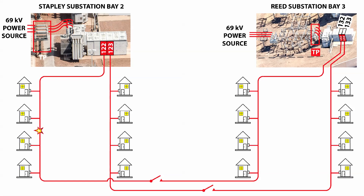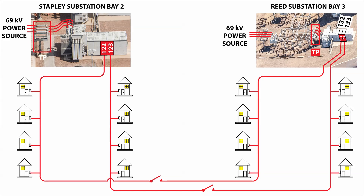If the tree branch is still in contact with the line after the first reclose of the breaker, then the relay will open the circuit breaker a second time, and it will automatically reclose again. Some faults will have cleared prior to the second reclosing, and in this case the breaker will stay closed and customers will barely notice the momentary dimming of their lights. But if the fault condition remains after the second reclosure, then the relays will open the circuit breaker for the third time and this time the breaker will stay open.